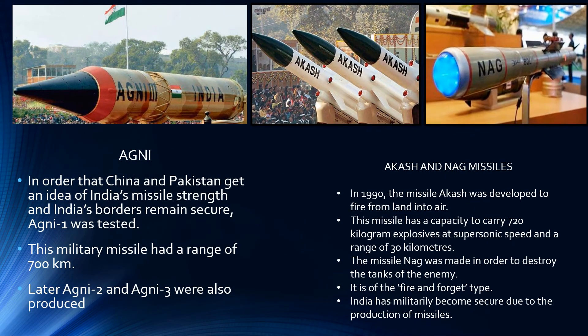In order to demonstrate India's missile strength to China and Pakistan and keep India's borders secure, Agni-1 was tested. This military missile had a range of 700 km. Later, Agni-2 and Agni-3 were also produced. In 1990, the missile Akash was developed to fire from land into air, with a capacity to carry 720 kg of explosives at supersonic speed and a range of 30 km. The missile Nag was made in order to destroy enemy tanks and is of the fire-and-forget type. India has militarily become secure due to the production of these missiles.